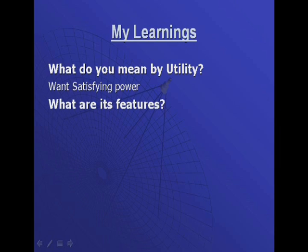What are the features of utility? First, utility is a relative concept — the utility of a particular commodity changes from time to time and place to place. For example, the utility of an umbrella is higher during the monsoon season than in any other season. Similarly, the utility of woolen clothes is more in parts of the country which are cold — for example, woolen clothes have more utility in Shimla and Manali than in Chennai.